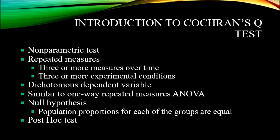I'll provide an example for the two types of repeated measures: measures over time and three or more experimental conditions, keeping in mind that we only have a dichotomous dependent variable for a Cochrane's Q-Test. For three or more measures over time, consider a situation at a mental health treatment facility where you're conducting research. Say you have 30 participants and you're treating them for depression with a treatment you believe alleviates depressive symptoms. You assess participants with one question: have depressive symptoms interfered with your functioning within the last seven days? They can only answer yes or no.